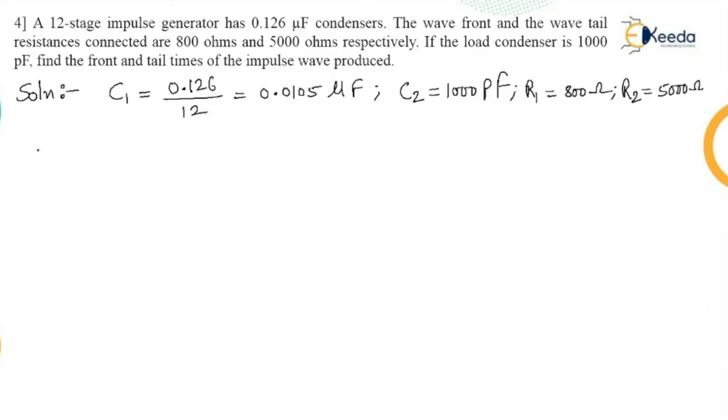So we know the formula for doing the calculation. So T1 is equal to 3 R1 C1 C2 upon C1 plus C2. R1 is 800 ohms. C1 is 0.0105 microfarad, so conversion is 10 to the power minus 6 farad.